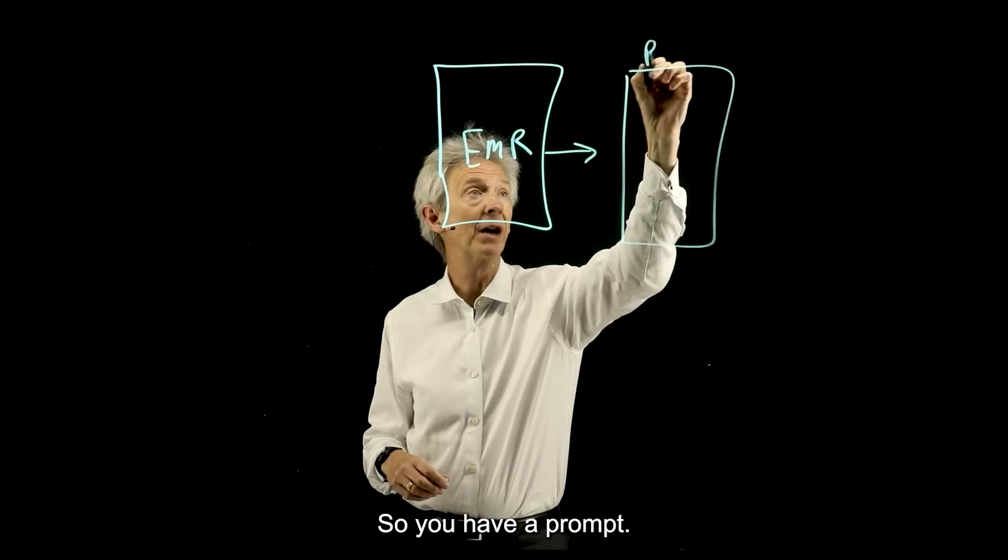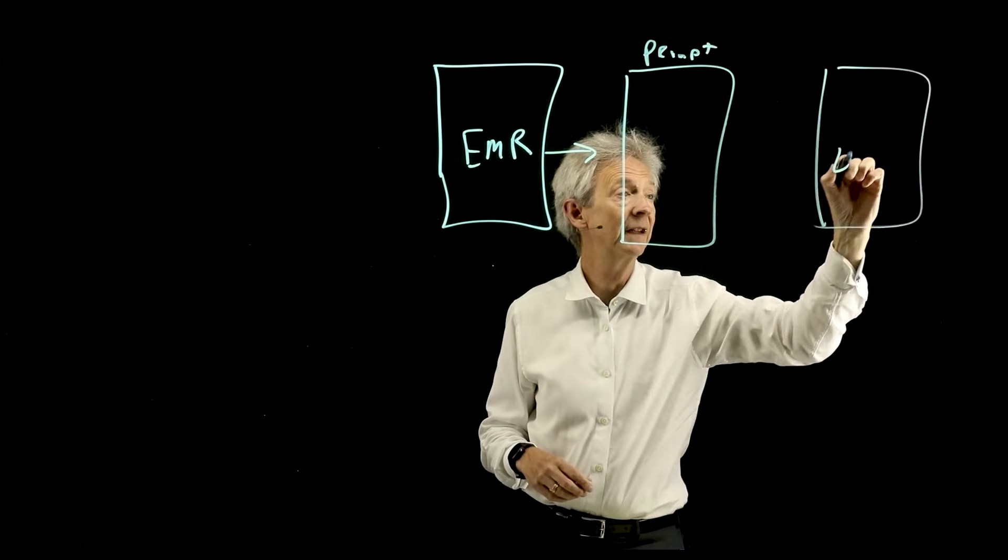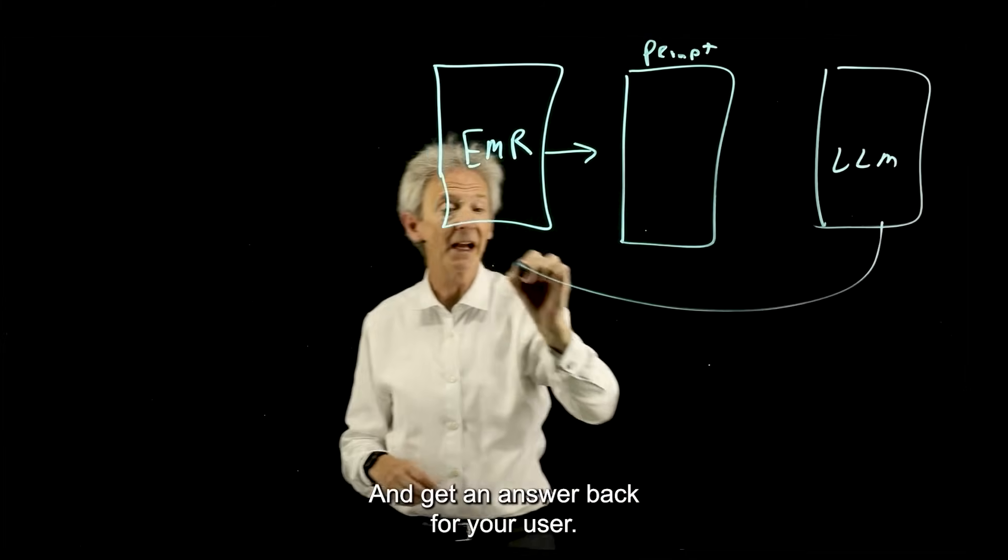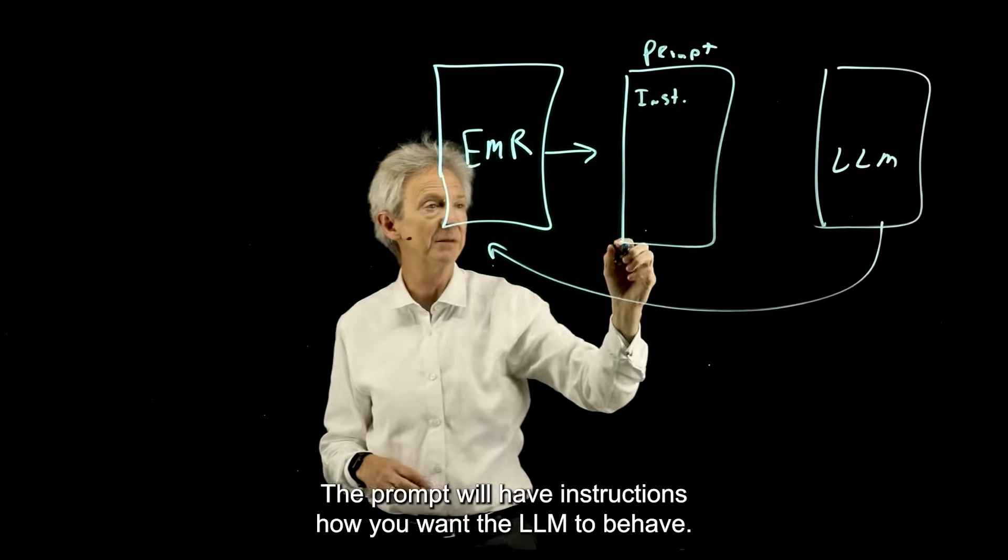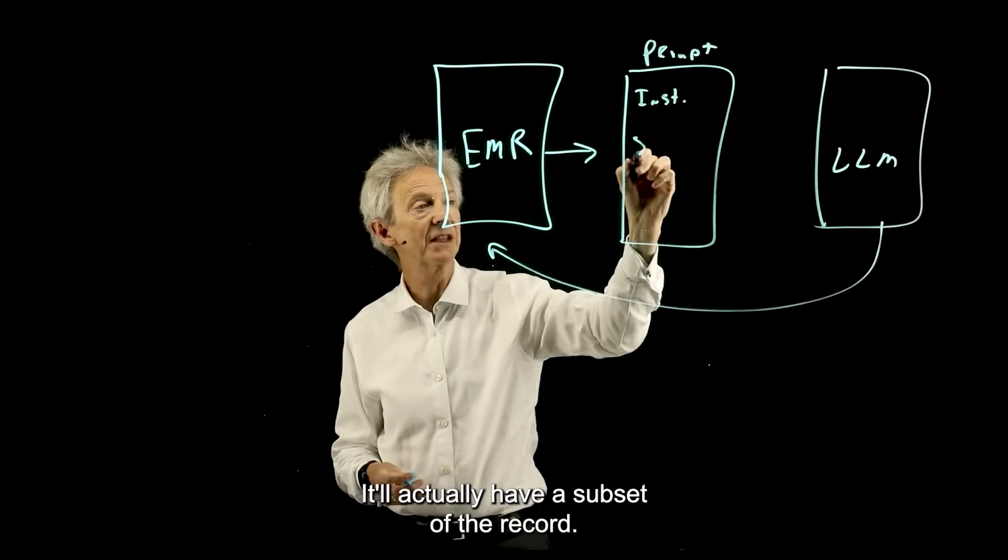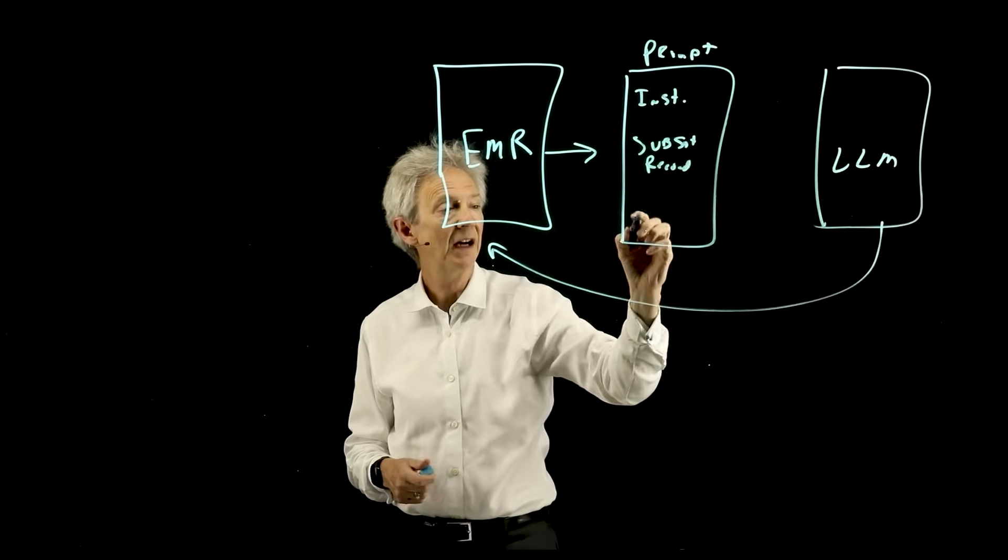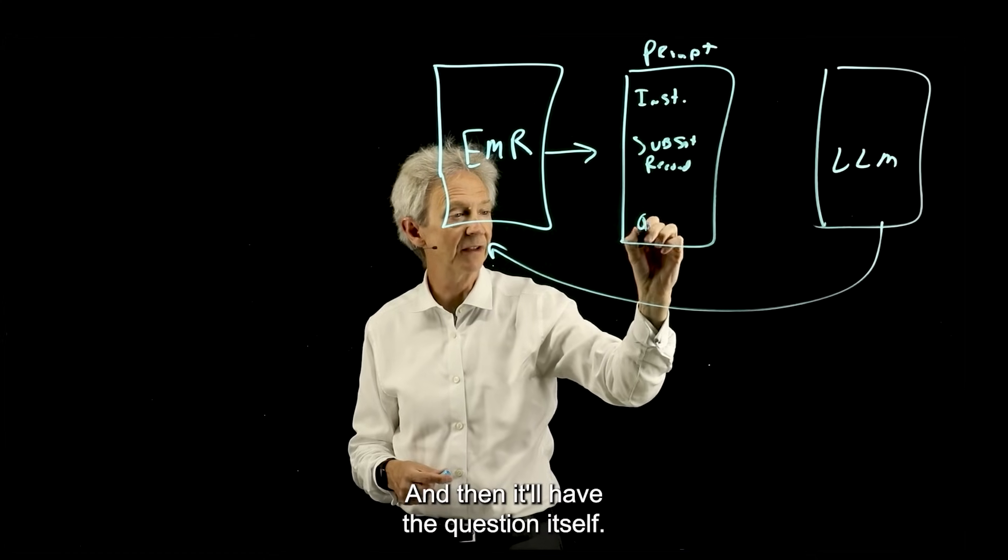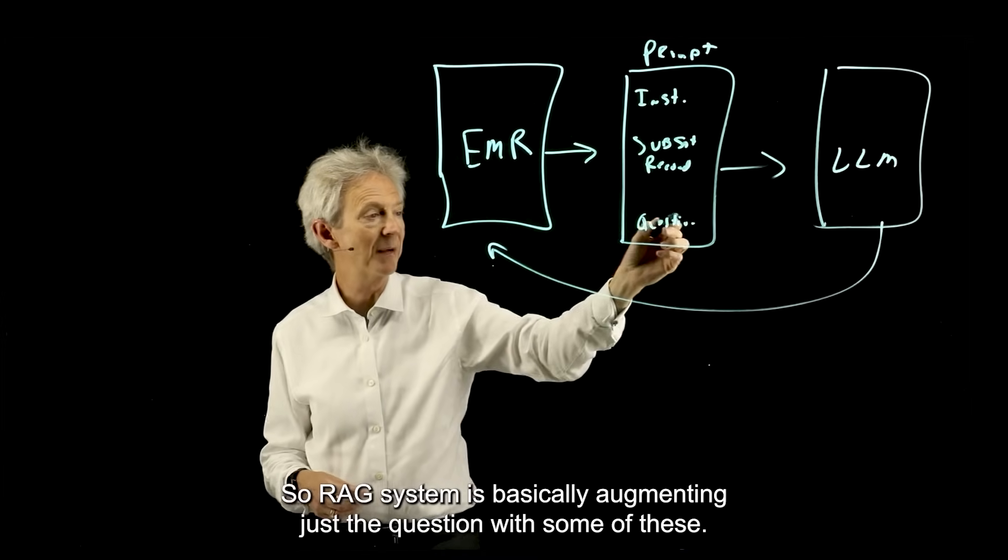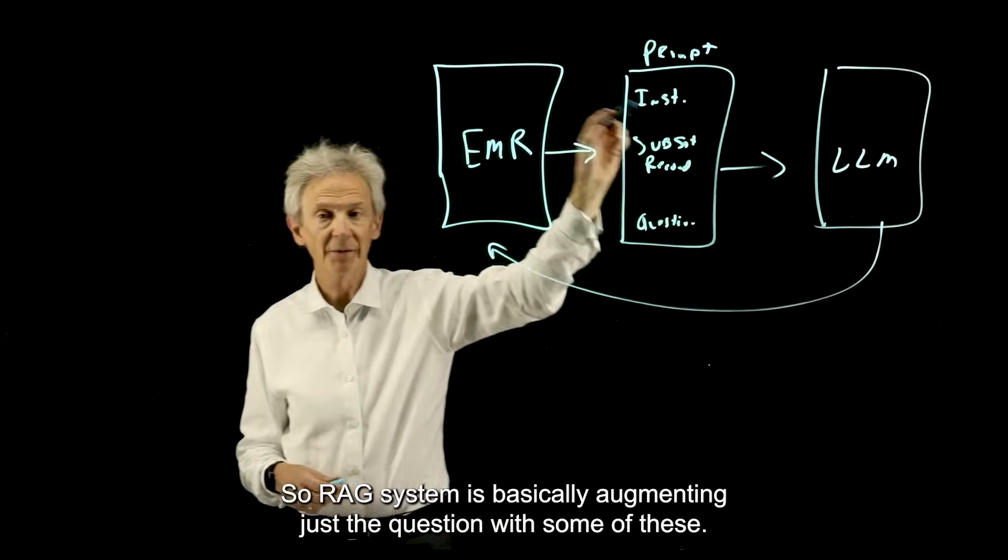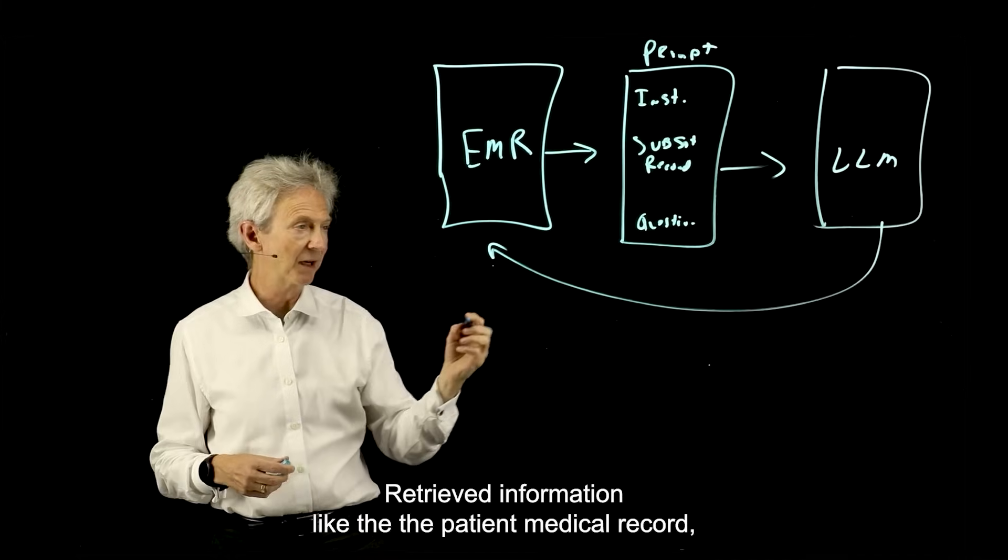So you have a prompt that you want to send to the LLM and get an answer back for your user. The prompt will have instructions how you want the LLM to behave. It'll actually have a subset of the record. And then it'll have the question itself.